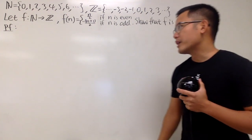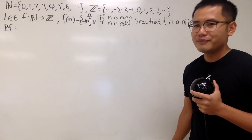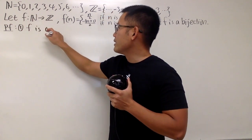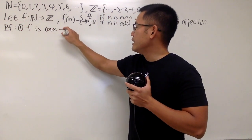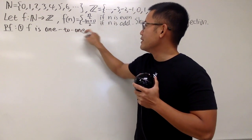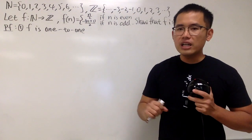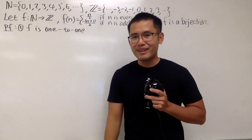And the second thing is f has to be onto. Let's begin right here. And to start with the proof, we are going to put down pf for it. It just feels so good every time we put down pf for the proof. But unfortunately, we cannot get partial credit by just putting down pf.